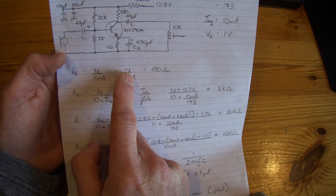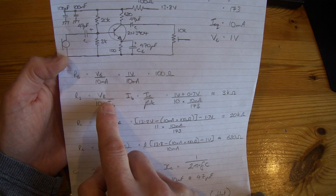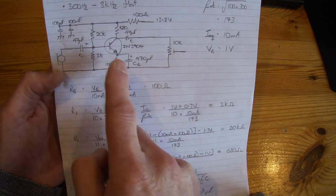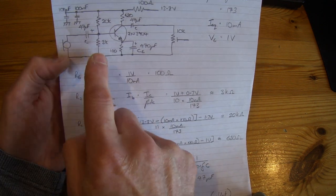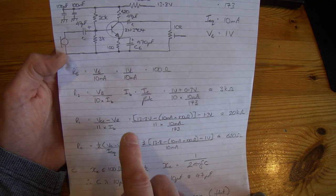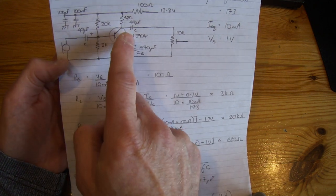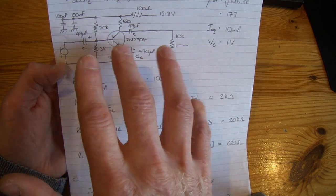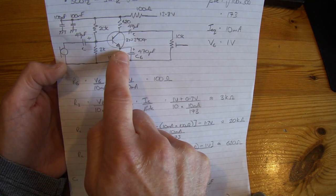So RE again 1 volt with 10mA, so it's 100 ohms. R2 here, same configuration, comes out at 3kΩ. R1 here, 11 times the base current going through that for a nice stiff voltage divider biasing, comes out at 20kΩ.